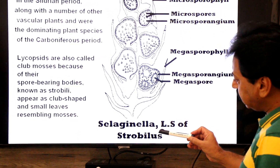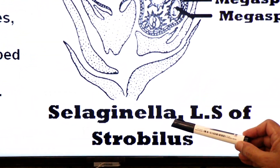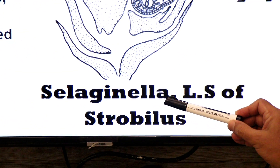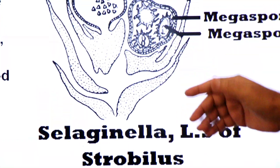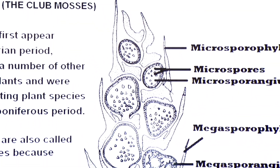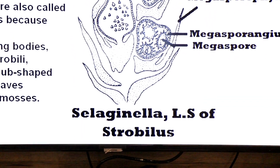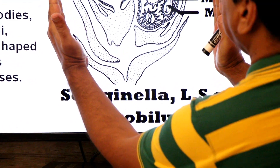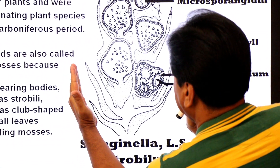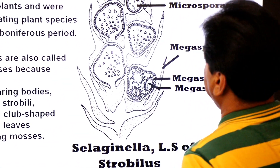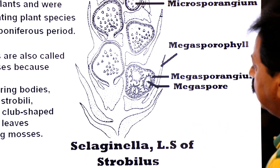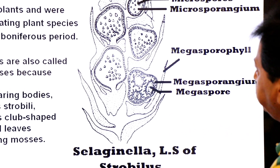Dear students, one genus of this class is Selaginella, which is a heterosporous plant. This is the diagram showing the longitudinal section of the strobilus — it is club-shaped, enlarged at one end. This club-shaped strobilus is the reproductive organ.